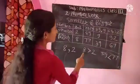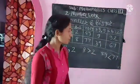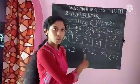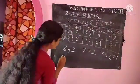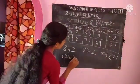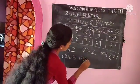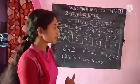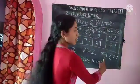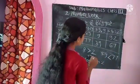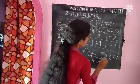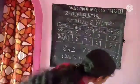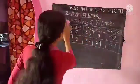Look at this — 8 is greater than 2, so how do we read it? Eight is bigger than two. So look at this: 8 is bigger than 2. And here, 59 is smaller than 77, so we write: 59 is smaller than 77. That is how we write it.